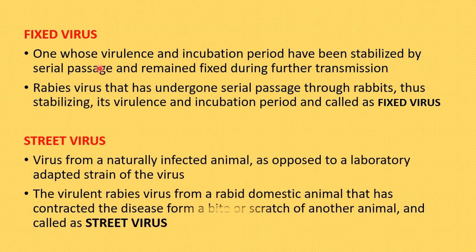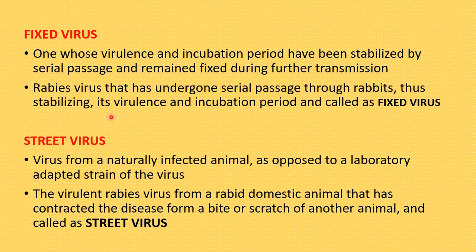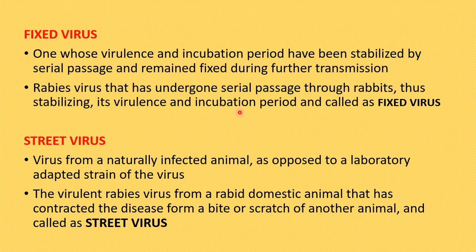A fixed virus is one whose virulence and incubation period have been stabilized by serial passage through rabbits and remain fixed during further passage. The street virus is the virulent rabies virus isolated from a naturally infected animal that contracted the disease from a bite or scratch. The street virus is thus opposed to the laboratory-adapted fixed strain.